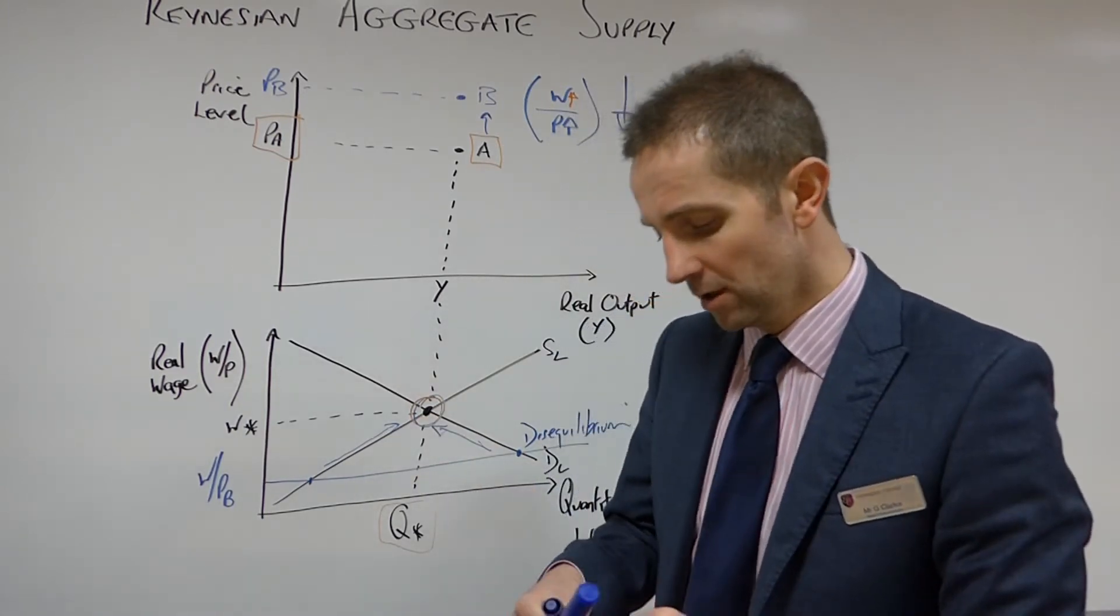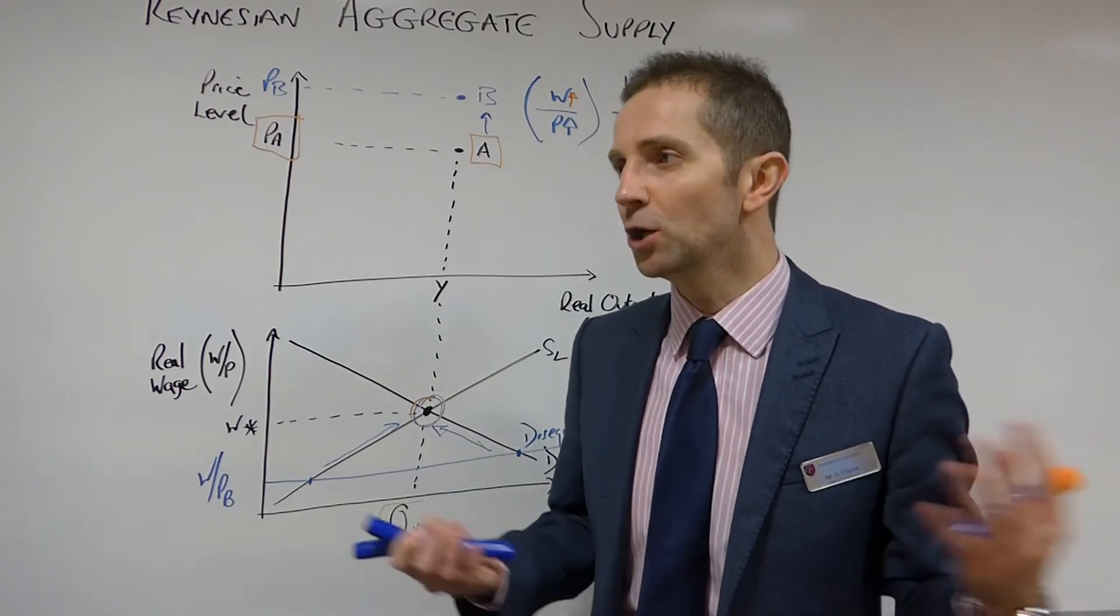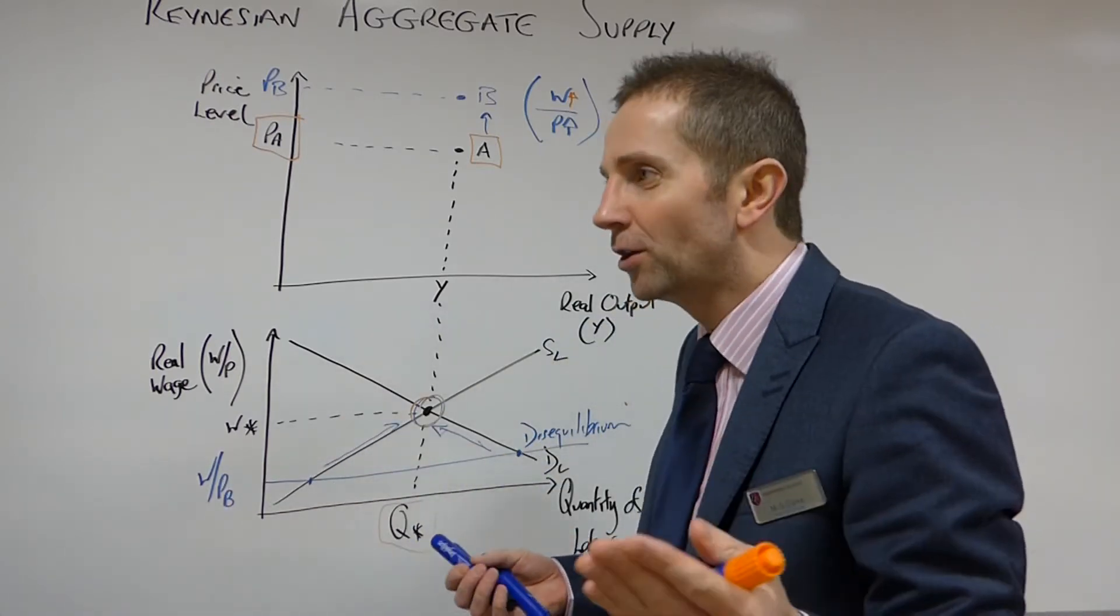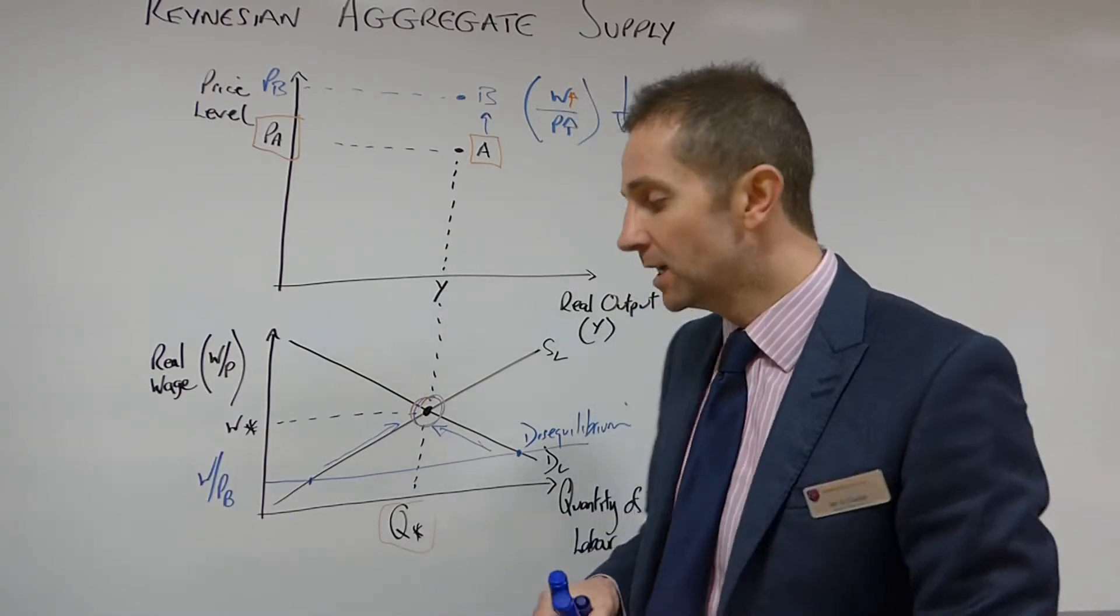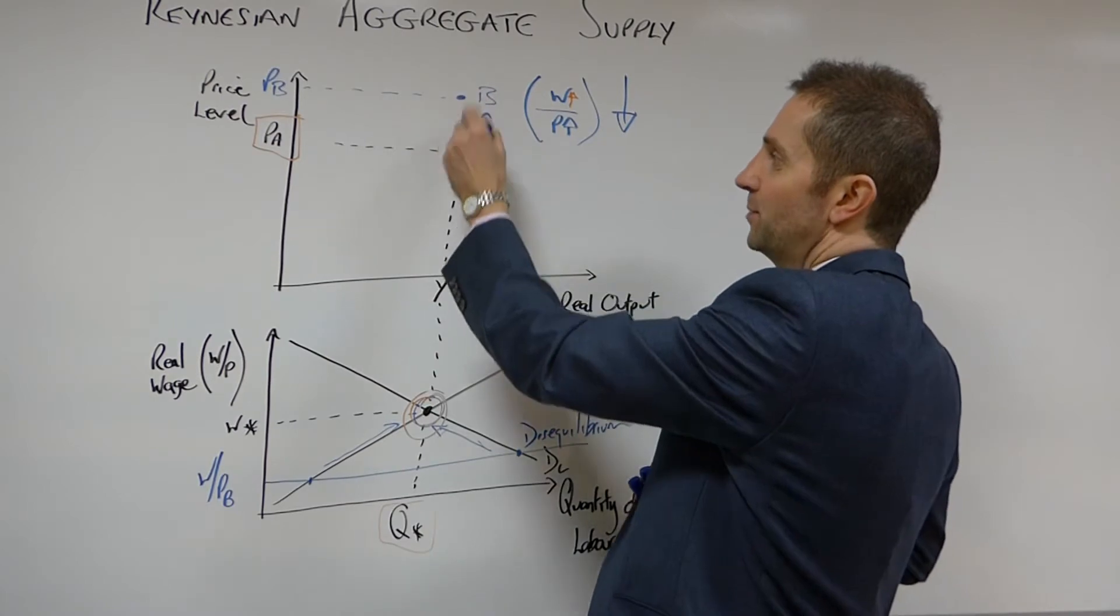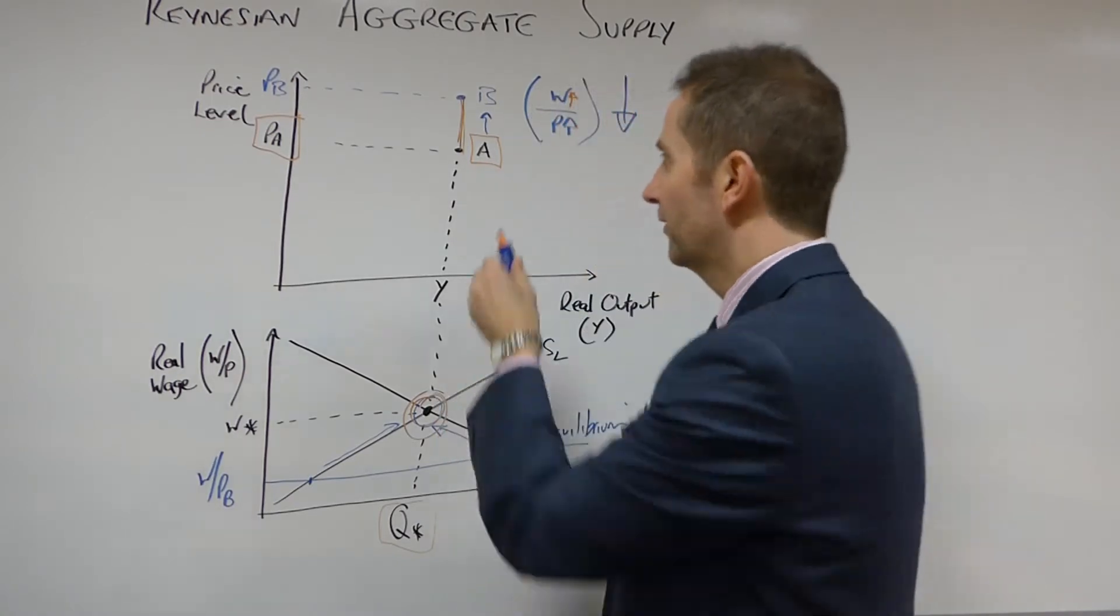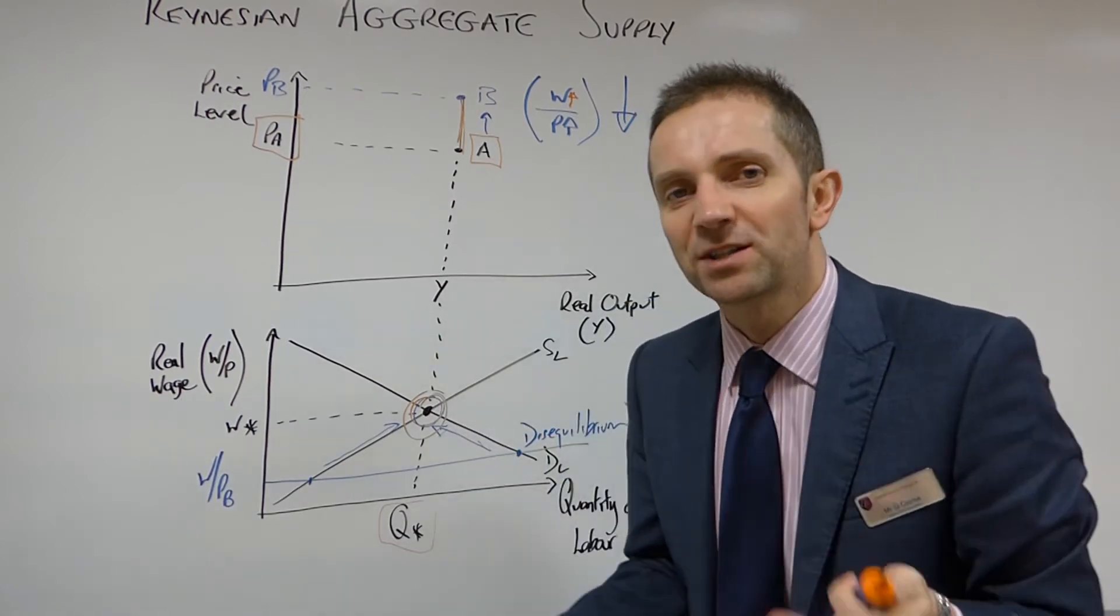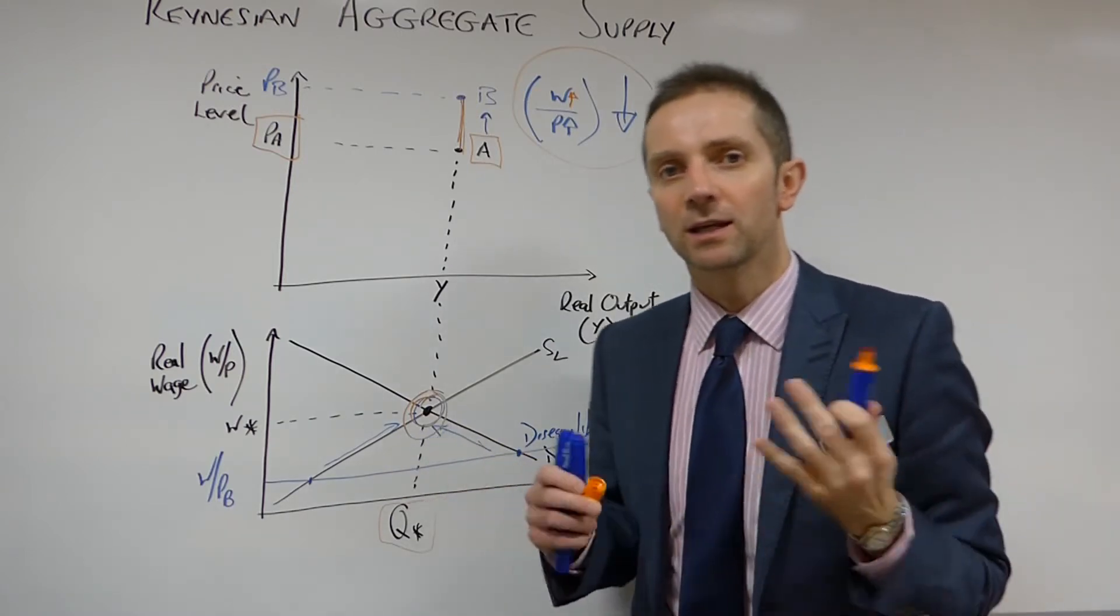Now, Keynesians argue that individuals are more than happy to take an increase in their money wage. I mean, who wouldn't be? You'd be mad, wouldn't you? So Keynesians would argue that people, just in the same way as classics do, are more than happy to take an increase in their money wage and this will restore equilibrium back to this position. And so we can say actually at any point between A and B, regardless of what happens to the price level there, the market is flexible enough to accommodate that because the money wage will rise and restore the equilibrium in the labour market.